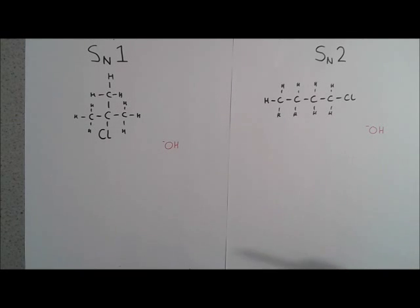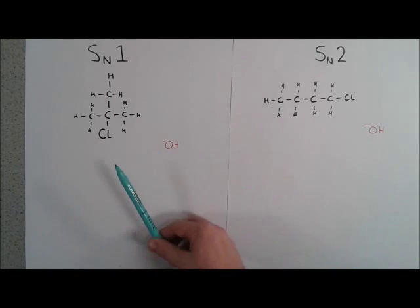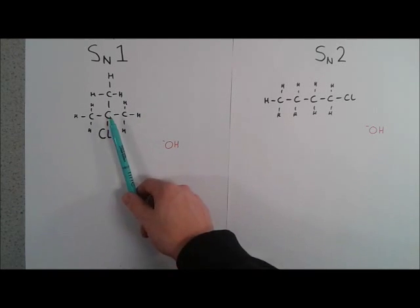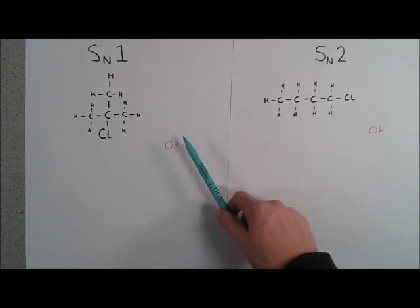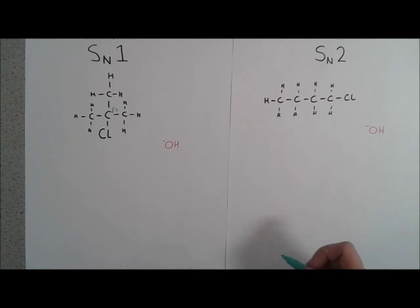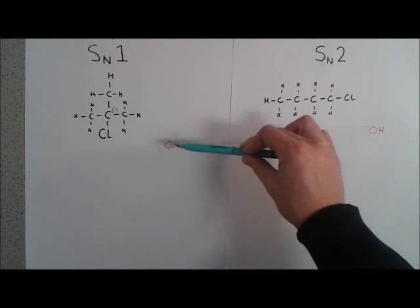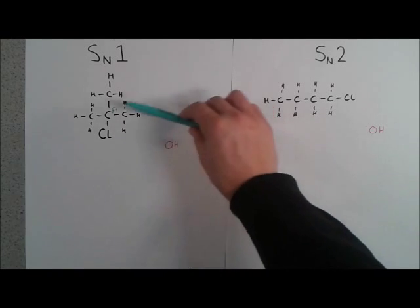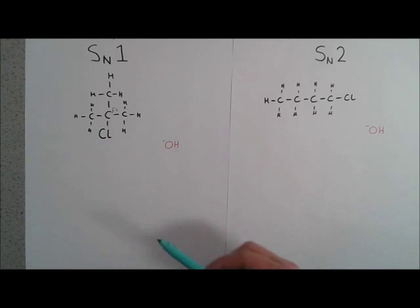We'll start with the SN1 reaction. In the SN1 reaction we've got a tertiary haloalkane where we've got a carbon surrounded by four different groups. The OH- wants to attack this carbon because of a delta positive charge. Unfortunately, that carbon is completely surrounded and there is no physical way for the OH- to get in to attack that carbon, and we refer to that as a sterically hindered molecule.